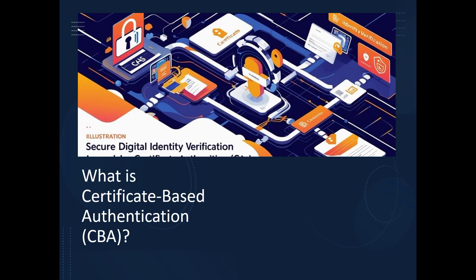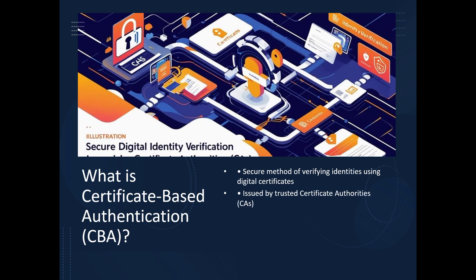CBA is a method that verifies identity using a digital certificate issued by a trusted Certificate Authority, also known as a CA. The certificate contains a public key, identity metadata, and is signed by the CA's private key. When a user or device presents a certificate during sign-in, Microsoft Entra checks whether it was issued by a trusted CA.